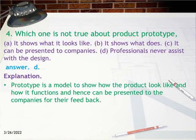Question 4: Which one is NOT true about a product prototype? a) It shows what it looks like, b) it shows what it does, c) it can be presented to companies, d) professionals never assist with the design. Answer: D. Explanation: A prototype is a model to show how the product looks like and how it functions, and hence can be presented to companies for their feedback.